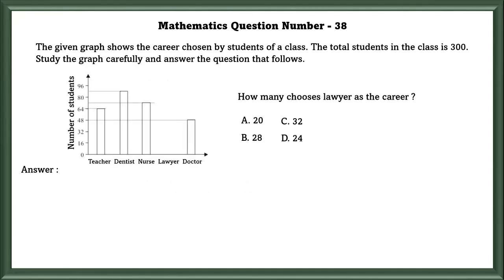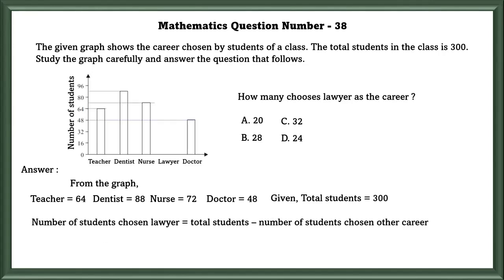Mathematics question number 38. The given graph shows the career chosen by students of a class. The total students in the class is 300. Study the graph carefully and answer the following question. How many chose lawyer as the career? In order to find how many lawyers are there, we have to subtract the teacher, dentist, nurse, and doctor from the total students in the class. That equals 28 students. So 28 students chose lawyer.